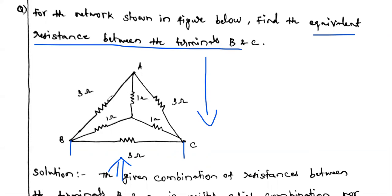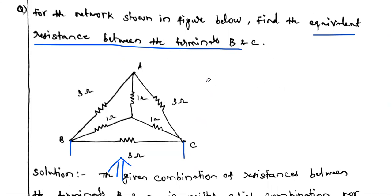Looking at the connections, the 3 ohm, 1 ohm, and 3 ohm resistors are not in either series or parallel combination. For a parallel combination, both ends must be connected at the same two nodes — but here there is another resistance connected at one end. So we cannot reduce this network using simple series or parallel resistor combinations.